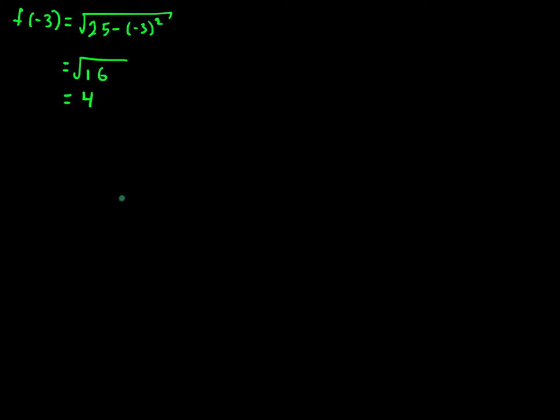And that means that the tangent line, I'll write it out, so this implies that the tangent line passes through the point negative 3, 4. Next, we need to find the slope, the tangent slope.